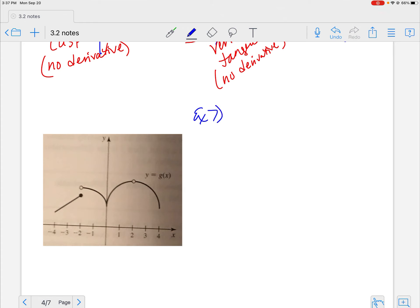Here's example seven. Part A says, find the values in my interval from negative four to four. Notice it's parentheses, so not including. At which G, which is my function here, is not continuous.